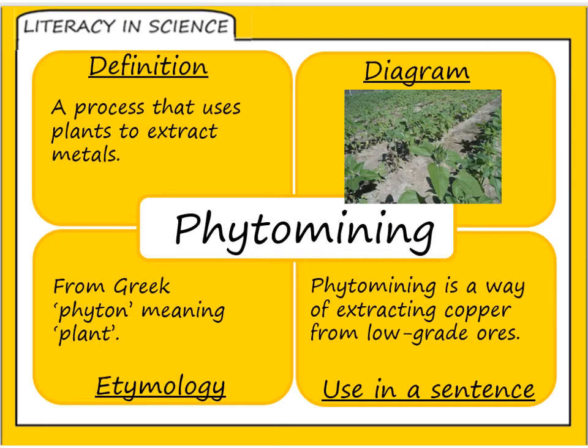Phytomining is a process that uses plants to extract metals. So phytomining is a way of extracting copper from low grade ores. And it's from a Greek word and phyton meaning plant. And mining is the origins uncertain, but it was a pit or a tunnel made for the purpose of obtaining metals and minerals.